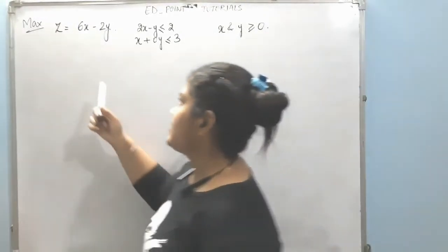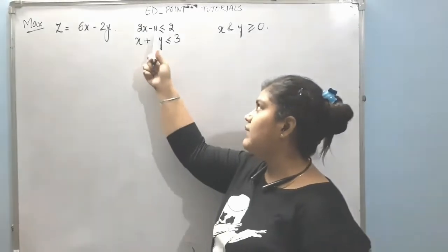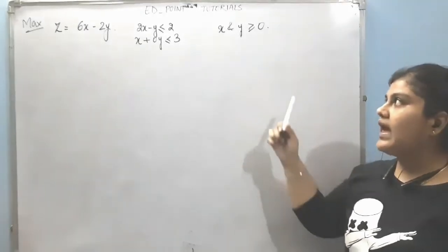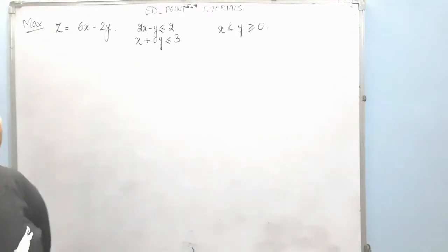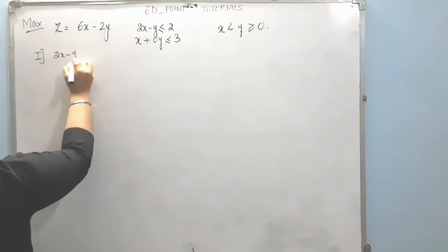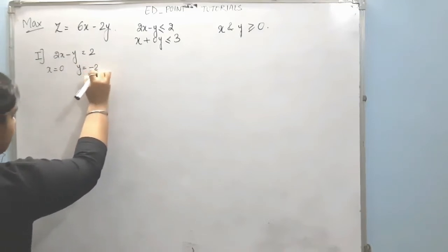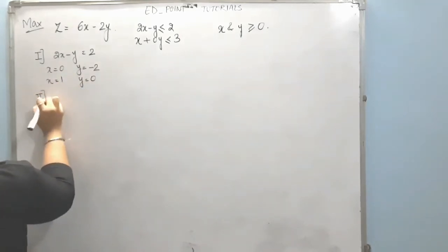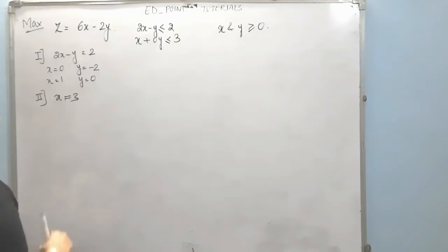We have the objective function 6x minus 2y which we need to maximize. We have structural constraints: 2x minus y less than or equal to 2, and x less than or equal to 3, along with the non-negative constraint x and y greater than or equal to 0. Starting with the structural constraints in equation form: for 2x minus y equals 2, when x equals 0 we get y equals minus 2, and when y equals 0 we get x equals 1. The second equation x equals 3 is directly a vertical line.